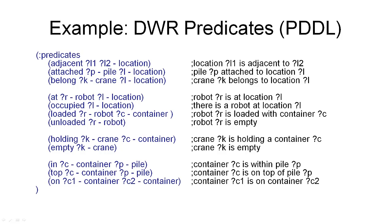Here are the relations defined for the dock worker robot domain in the PDDL syntax. The first predicate mentioned here is the adjacent predicate, which defines when two locations are next to each other. So the way this works is that we name the relation that we want to define, and then we give the parameters to this relation. In this case, they are two locations.